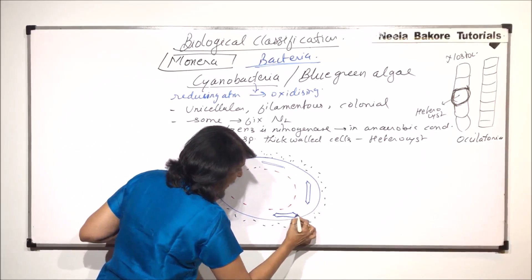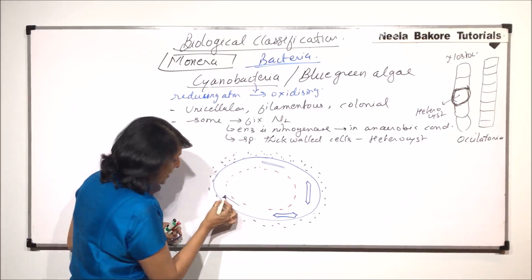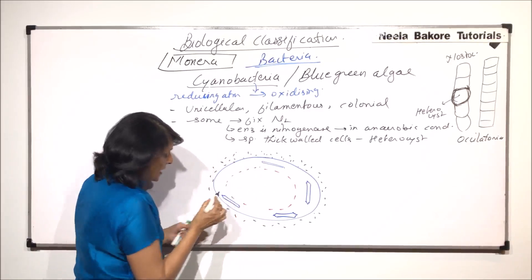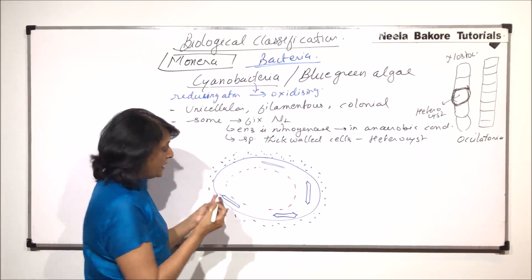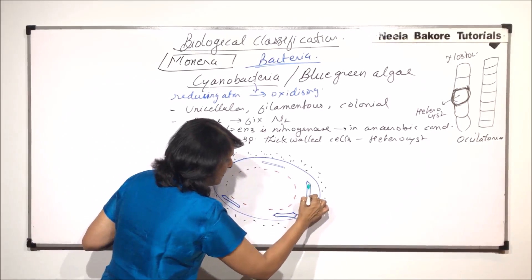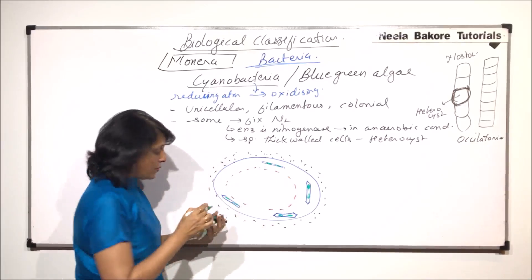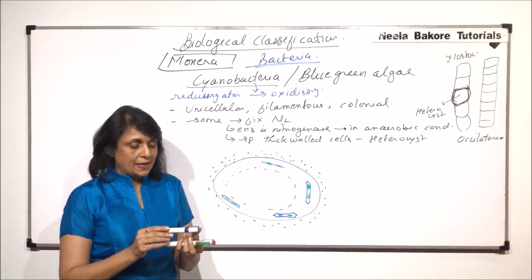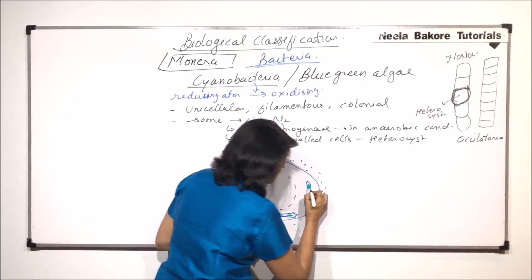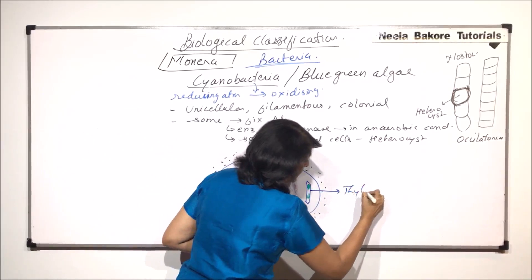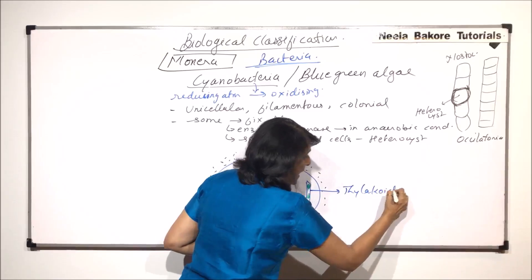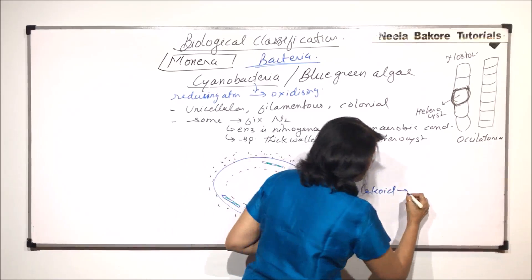They are not in the form of a stack which we call the granum but in this is present the pigment. Here we would find pigments like chlorophyll A, carotenoids, xanthophyll etc. This structure which we have drawn is a thylakoid and thylakoid has pigments.